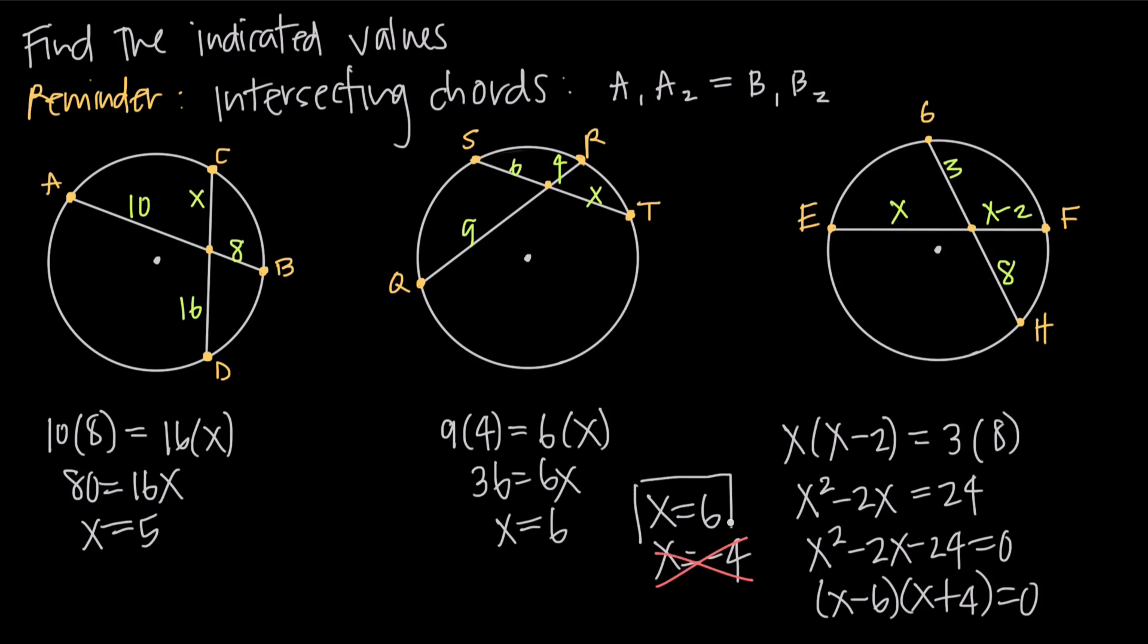So x equals negative 4 can't possibly be a real solution to this problem. That means that x equals 6 is going to be the unknown value of x. And if we want to go ahead and plug in here, we can say that this length is going to be 6. When we plug 6 into x minus 2, we're going to get 6 minus 2 or 4. So we can say that this length is equal to 4. And then if we just want to double check ourselves, we should be able to say 6 times 4 or 24 is equal to 3 times 8 or 24. So in fact, it does check out as a value for x that satisfies this formula of intersecting chords.